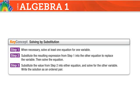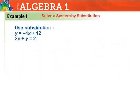In step three, I take the value for x or y found in step two and substitute it into either of the two equations, then write the solution as an ordered pair. Let's look at example one: use substitution to solve the system y equals negative 4x plus 12, and 2x plus y equals 2.